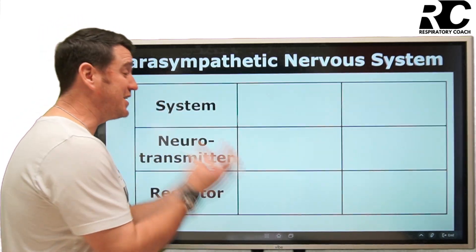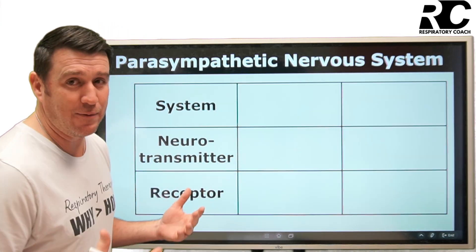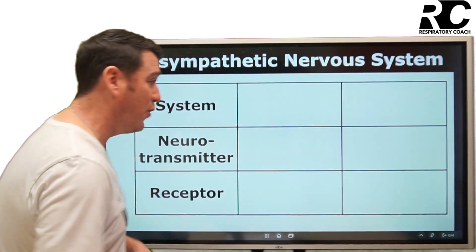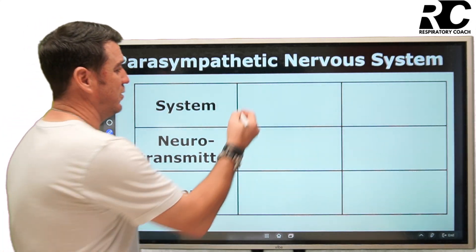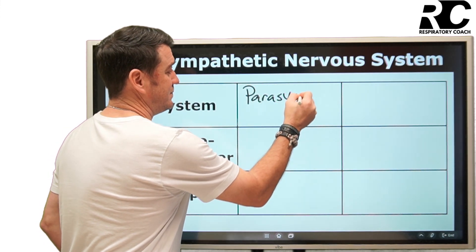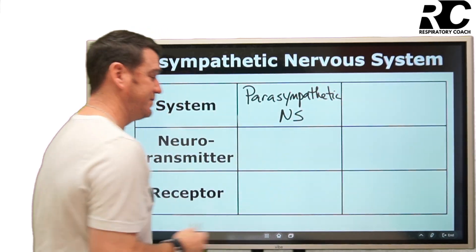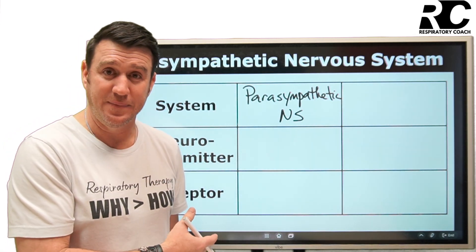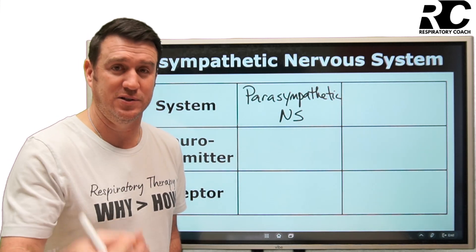We're going to do the same thing we did in the prior video when we were talking about the sympathetic nervous system, except now we're talking about the parasympathetic nervous system. Hopefully you have your paper and you're drawing this table with me. The system is the parasympathetic nervous system — that's good to know. We didn't like those effects, so we want to block them.